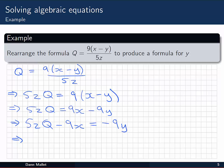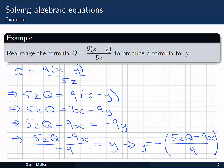My final step is to get rid of this minus 9 multiplier that's stopping me from seeing y by itself. So I have 5zQ minus 9x, all divided by minus 9, equal to y. You can leave it like that if you like, or you can rewrite it as a statement for y. I'm going to bring that minus out the front as well. You have minus (5zQ minus 9x) all divided by 9. So there's our formula for y.